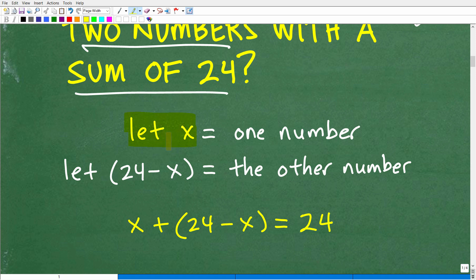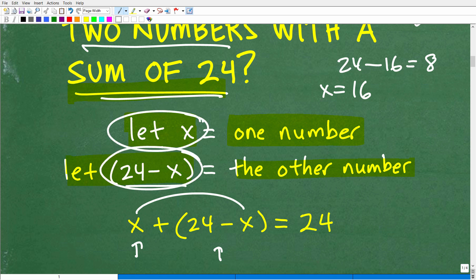Let's go ahead and let X equal one number. Now I know that the sum of these two numbers is 24. So if X is one number, I'm going to let 24 minus X be the other number. If you have one number plus this other number, 24 minus X, if I add these up, it's got to be 24. So X and negative X cancel. If X is 16 and two numbers add up to 24, the other number is 24 minus 16, which is 8.